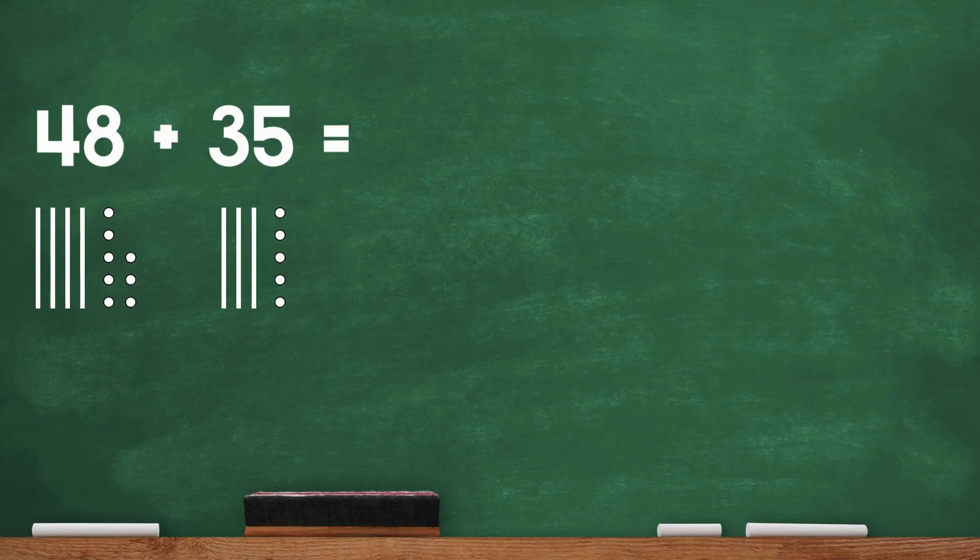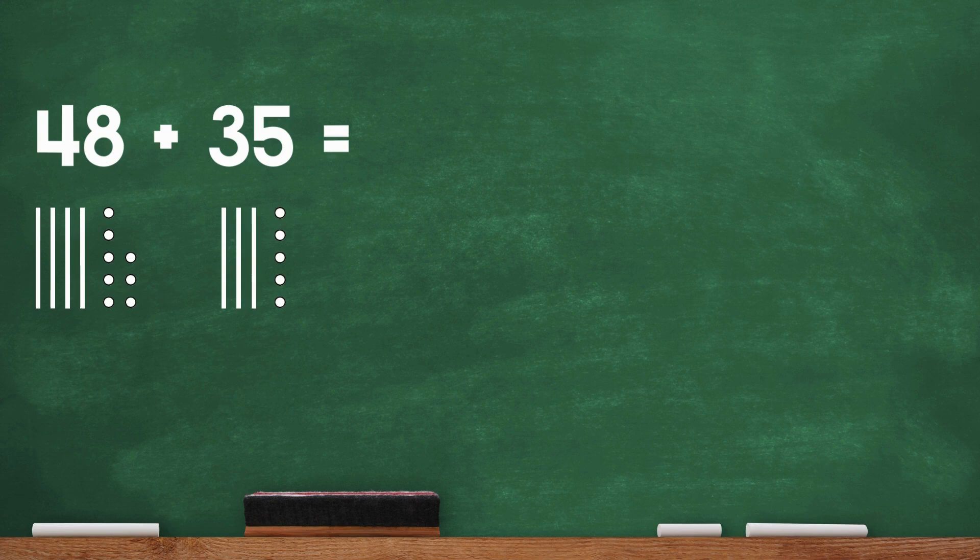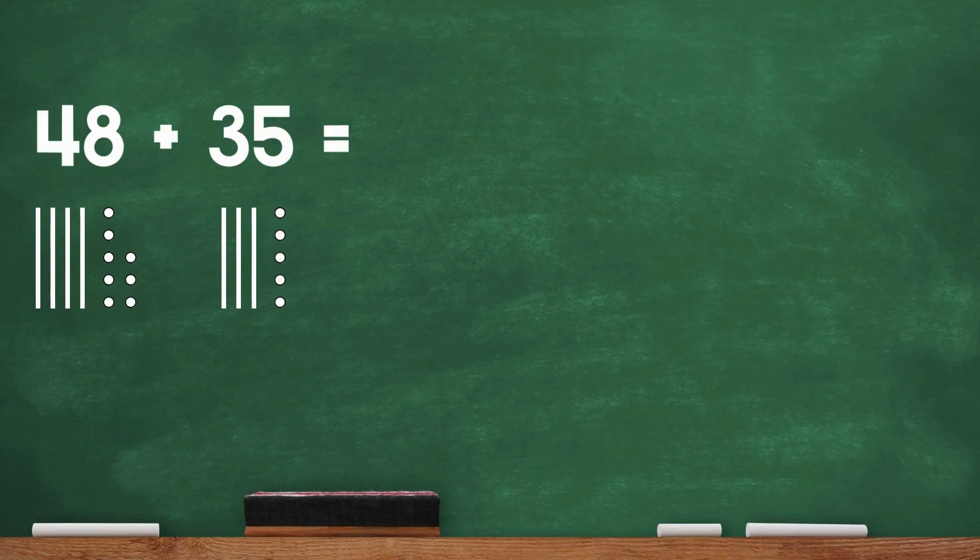Okay, let's start by adding the ones. What is 8 ones plus 5 ones? 8 ones plus 5 ones is 13 ones. That's more than 10. Do you know what to do?